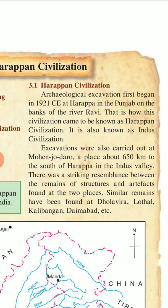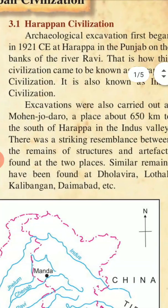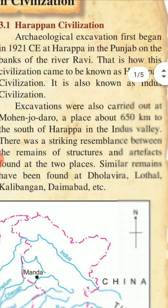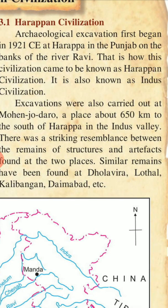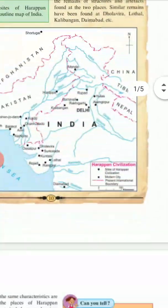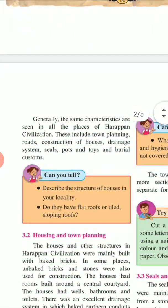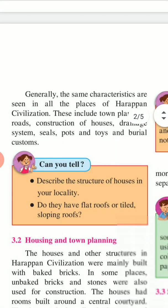Similar remains have been found at Dholavira, Lothal, Kalibangan, Daimabad, and Chandrani. The same characteristics are seen in all the places of the Harappan civilization. These include town planning, roads, construction of houses, drainage systems, seals, pots, toys, and burial systems.